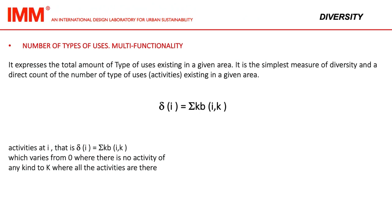The number of types of uses indicates multifunctionality. It expresses the total amount of types of uses existing in a given area, and is the simplest measure of diversity — a direct count of the number of types of uses and activities existing in a given area.